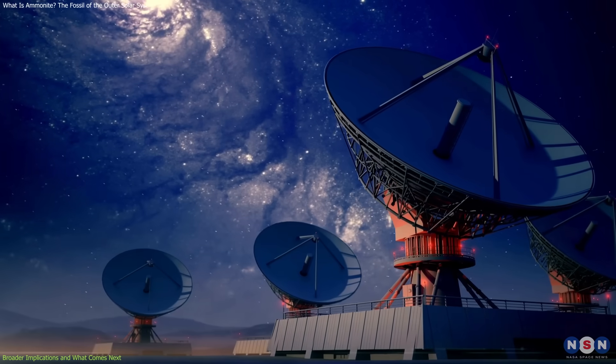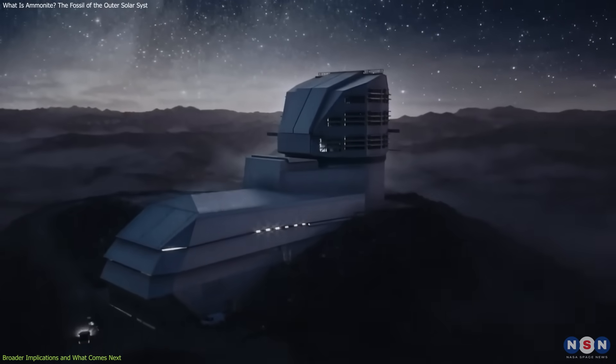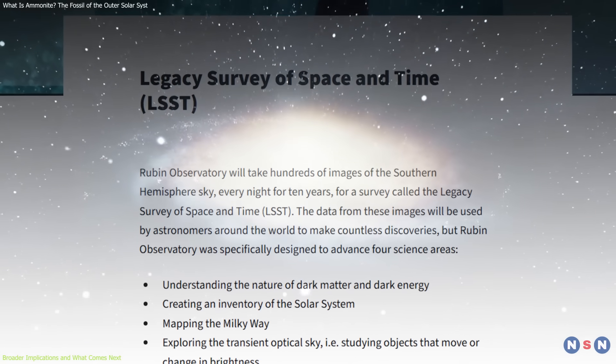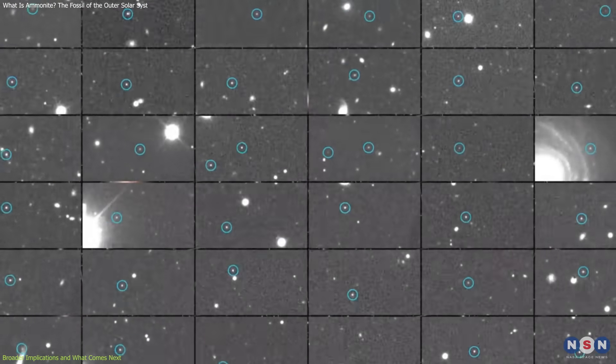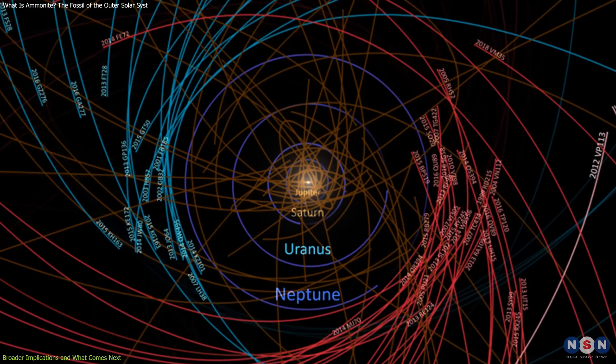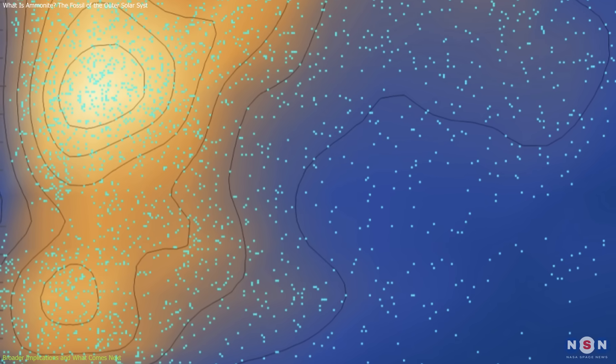This is where upcoming surveys become critical. The Vera C. Rubin Observatory, set to begin full operations with its Legacy Survey of Space and Time, LSST, will likely discover hundreds of distant objects in the next decade. With that many orbits to study, astronomers will be able to identify whether the clustering pattern holds or whether it dissolves in a larger sample.